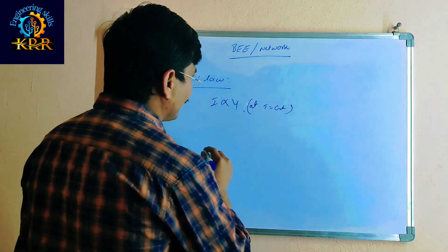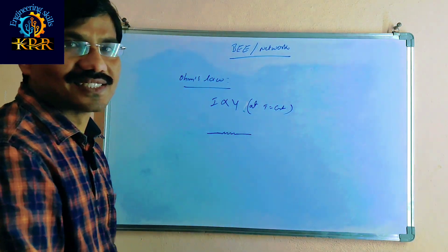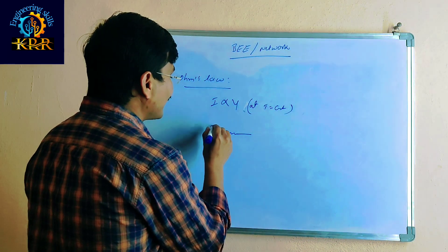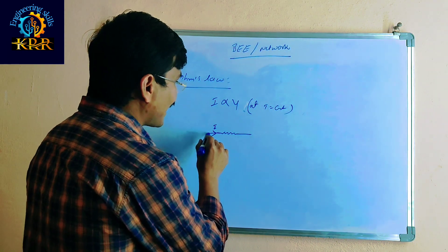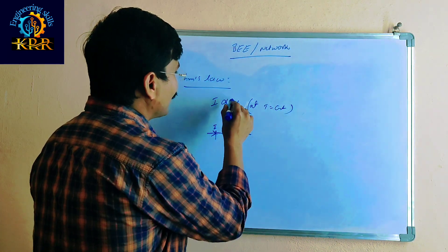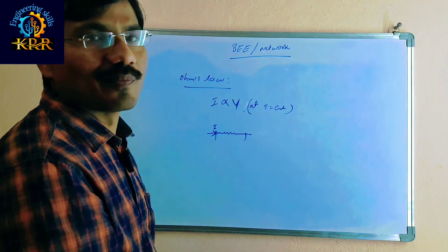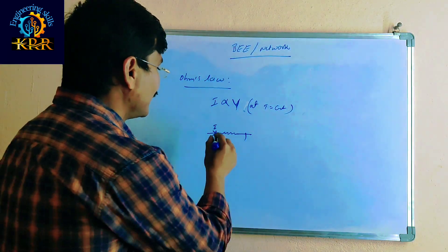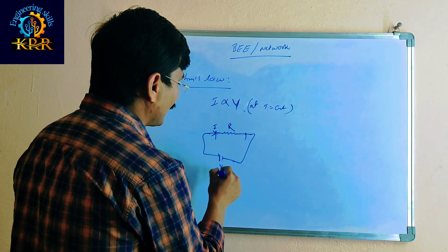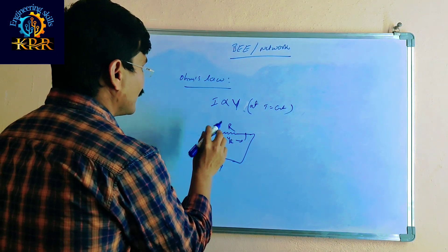This is the conductor. In this conductor there is resistance. The current carrying through this conductor is directly proportional to the voltage across this element, at constant temperature. This is called Ohm's law.